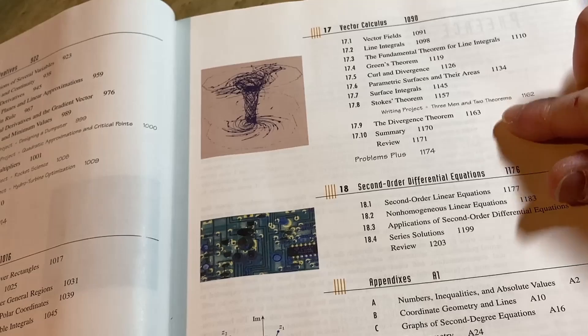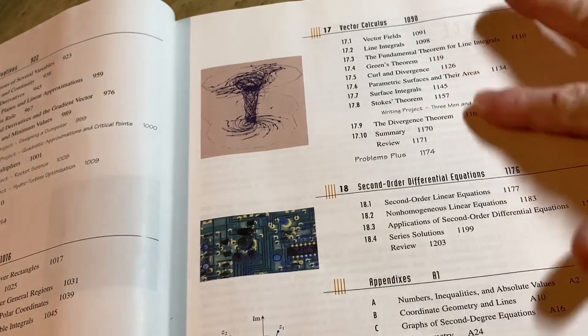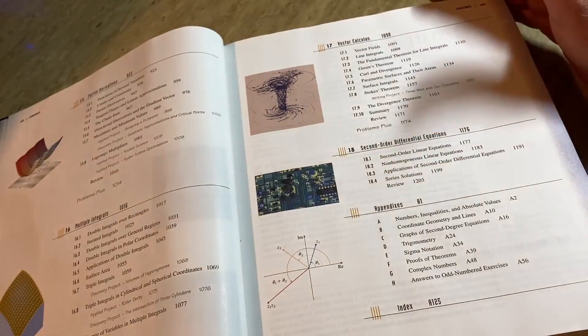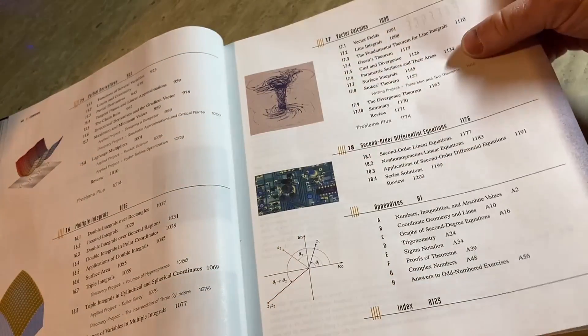But it does talk about vector calculus at the end. In particular, it talks about Stokes theorem and the divergence theorem, which most calculus courses nowadays don't get that far. Some schools have a calculus four, and they use that to teach the later chapters.